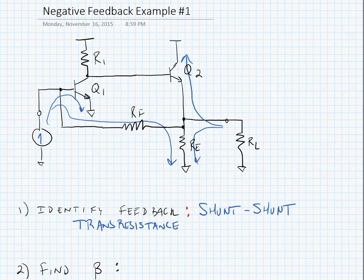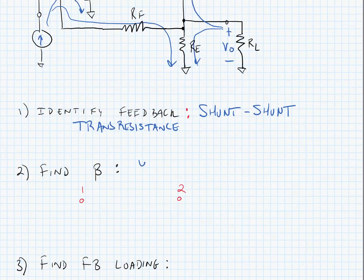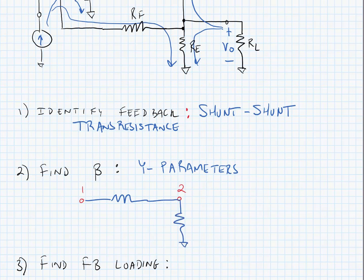This means our input will be a current and our output will be a voltage. To find beta, we're going to use y-parameters. Here's our feedback network. Beta is equal to i1 over v2 when v1 is equal to 0.